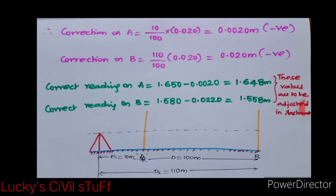I have calculated based upon the formula, correction on A and correction on B is 10 by 100 into 0.020, negative correction. Error is positive, so correction should be negative.